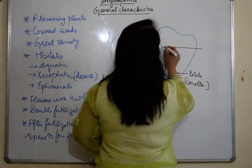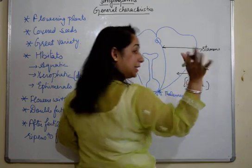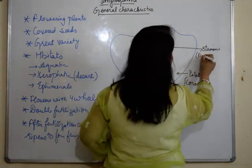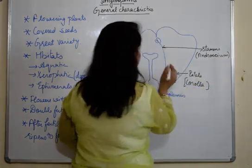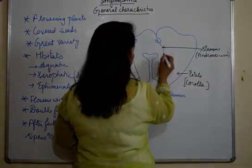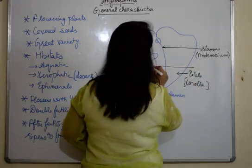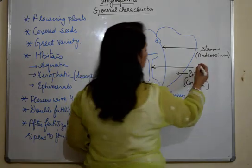Then we have singly placed stamens, or collection of stamens, then androecium. Then we have this central part, it's known as pistil, or gynoecium.